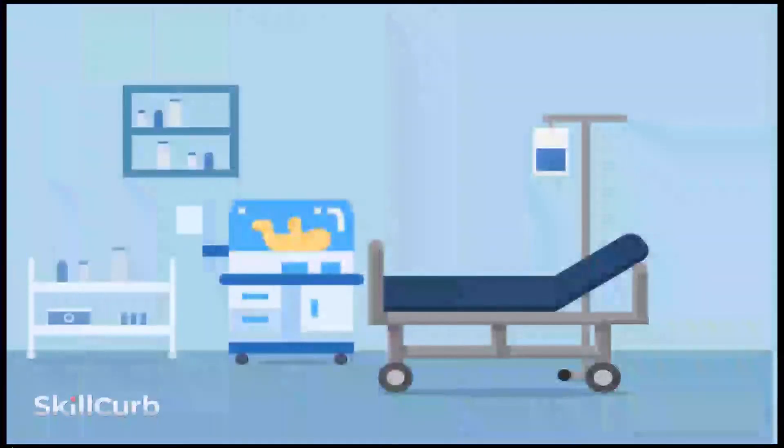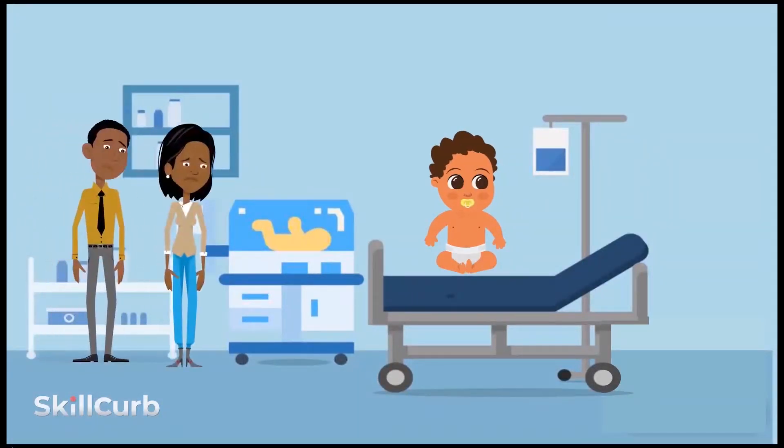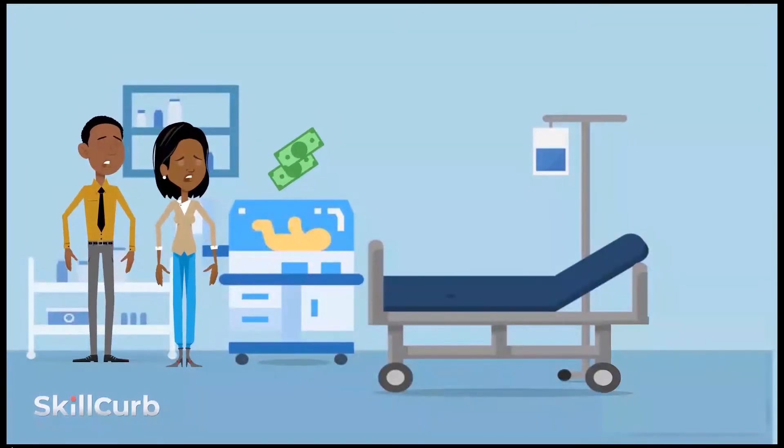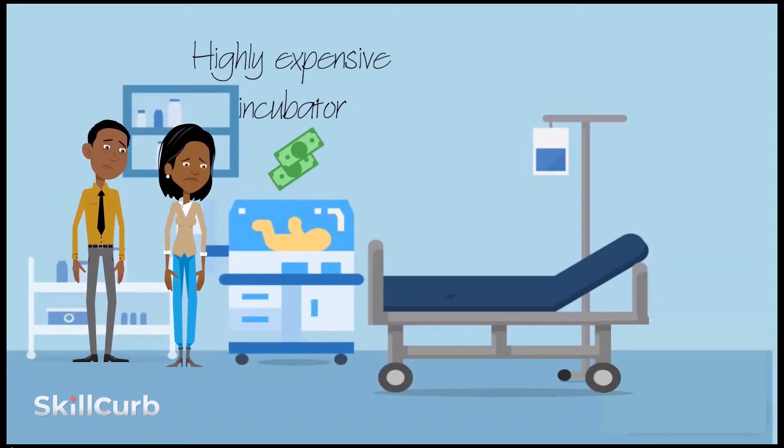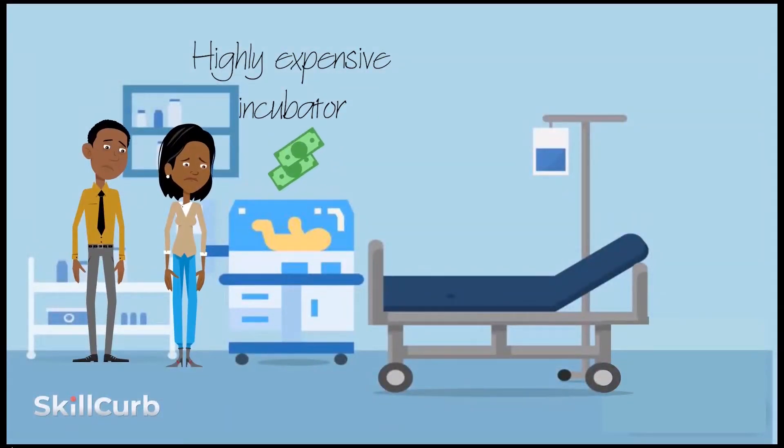Every year approximately 20 million premature and low birth weight babies are born. Unfortunately, 4 million babies die within the first month. In addition, 99% of the deaths happen in low to middle income countries. Many people can't afford to save their babies' lives because the life-saving device, the infant incubator, is highly expensive. It costs about $25,000 for a single unit and is completely out of reach for poor people.